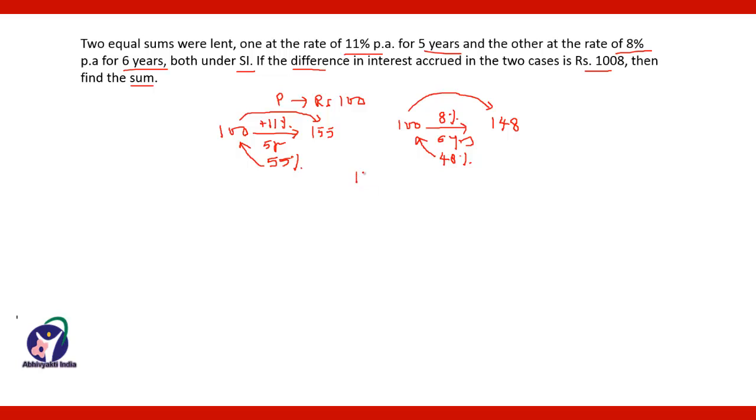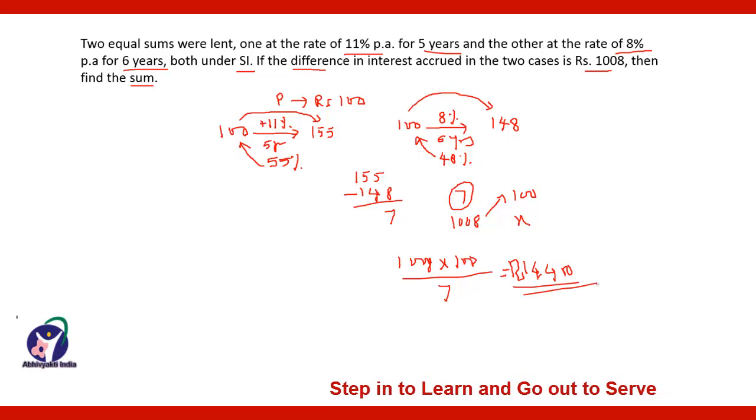And the difference between these two will be 155 minus 148, which equals Rs 7. The difference is Rs 7 when the principal is 100. Then what will be the principal when the difference is Rs 1008? So multiply Rs 1008 by 100 divided by 7, and you get Rs 14,400. So the principal amount is Rs 14,400.